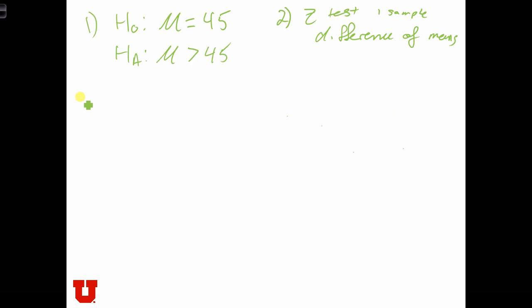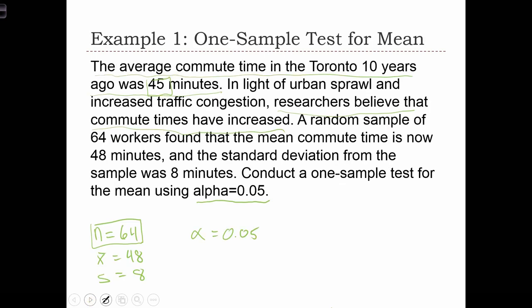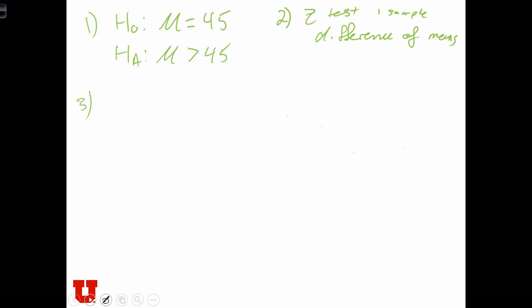Step three, select the statistical significance. This is given to us, alpha equals 0.05. And in step four, we have to delineate the zones of acceptance and rejection.